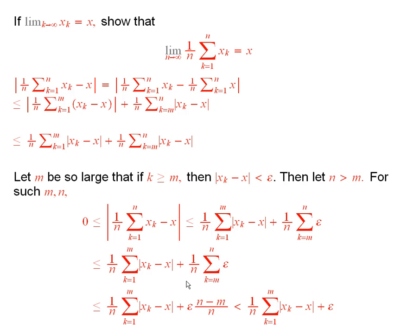Now, this here is smaller than or equal to this sum, plus epsilon times n minus m over n. That's smaller than epsilon. And now, you look at what you have here.